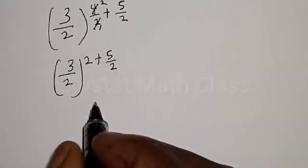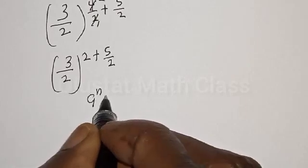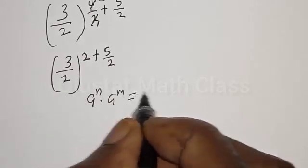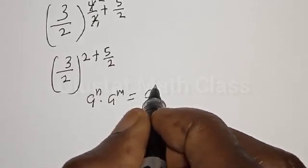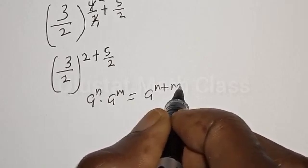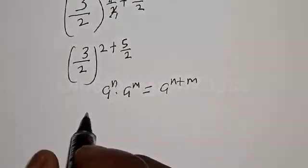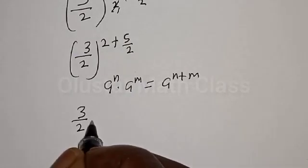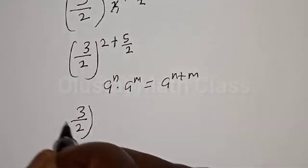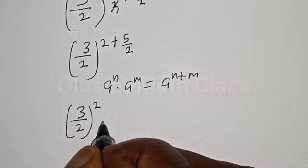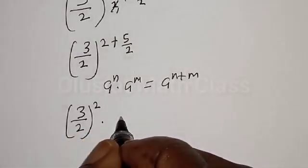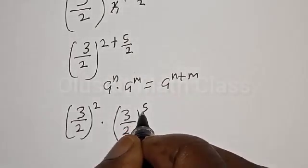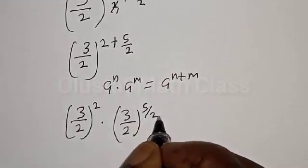Remember: if you have a raised to the power n multiplied by a raised to the power m, it is the same as a raised to the power n plus m. Therefore our equation becomes 3 over 2 squared, multiplied by 3 over 2 raised to the power 5 divided by 2.